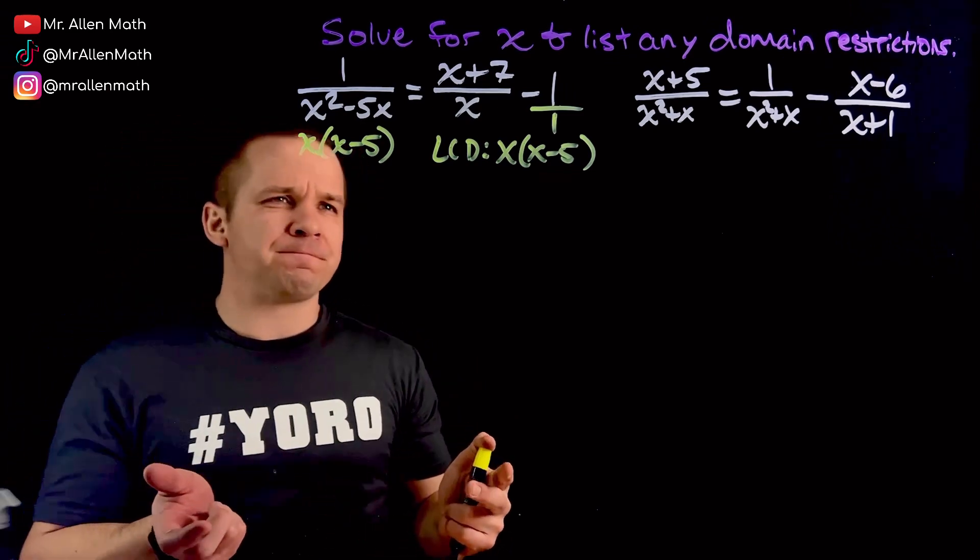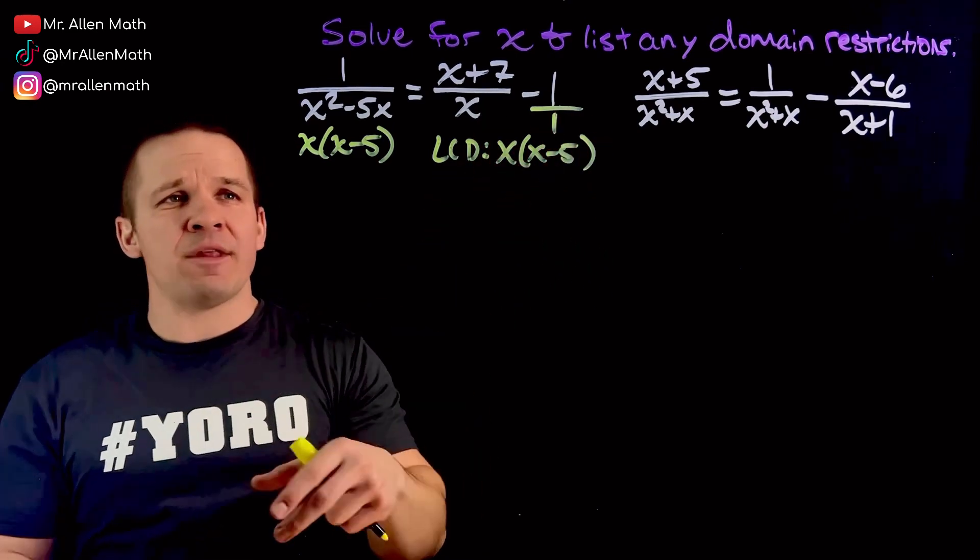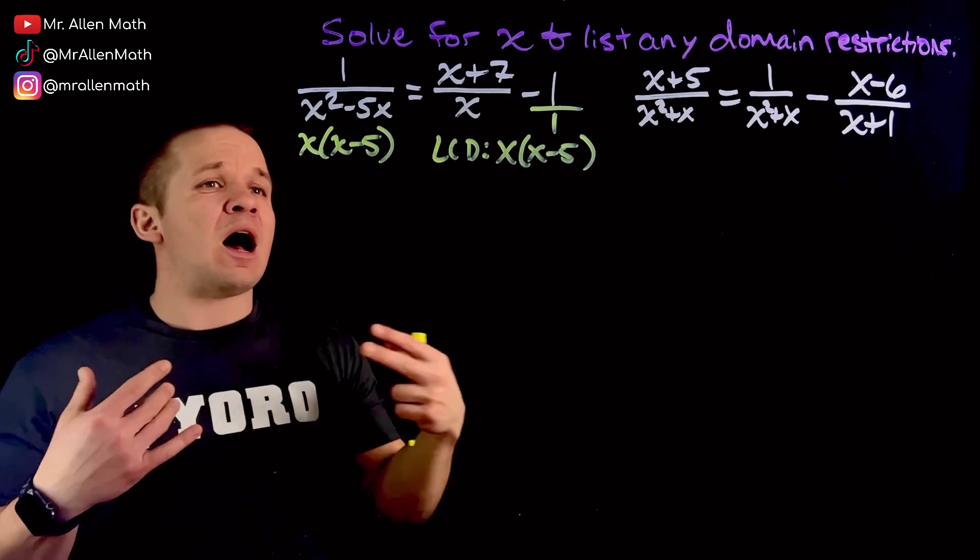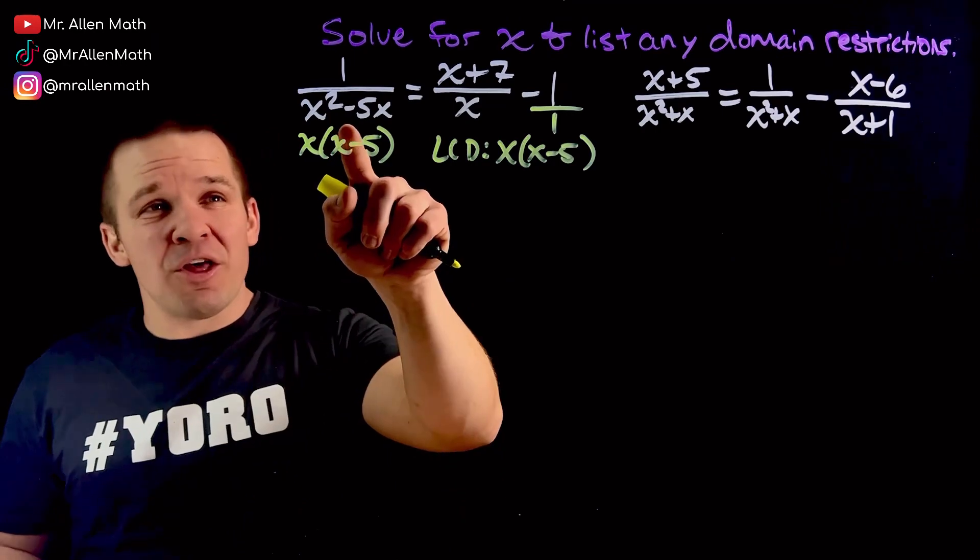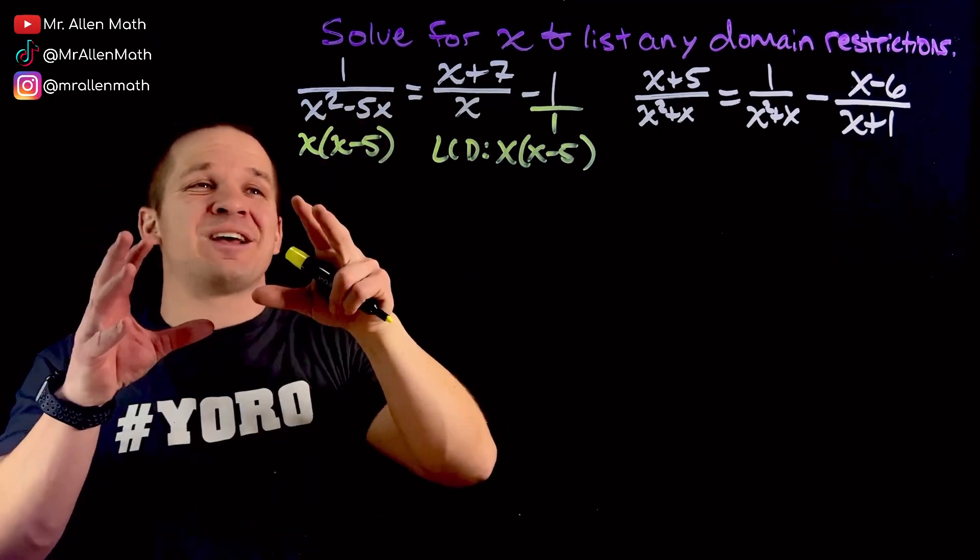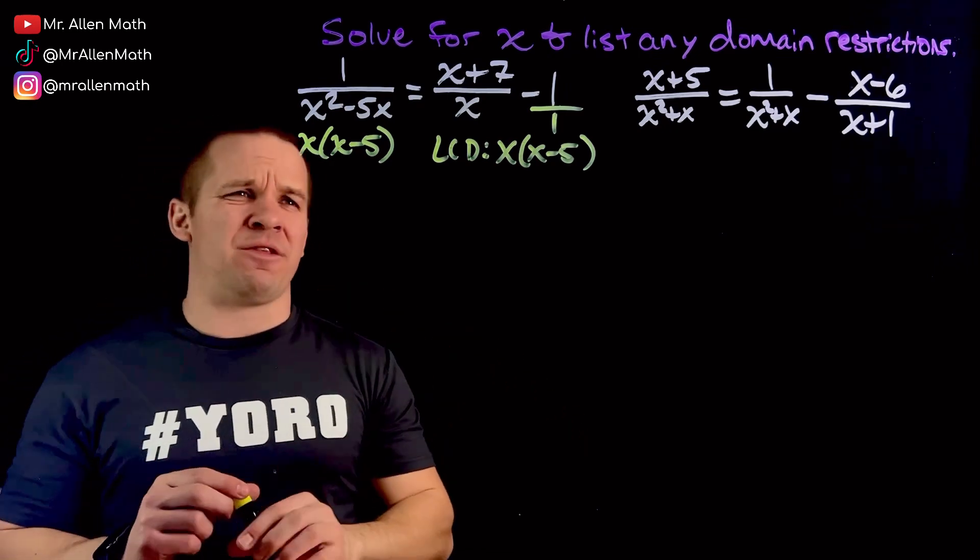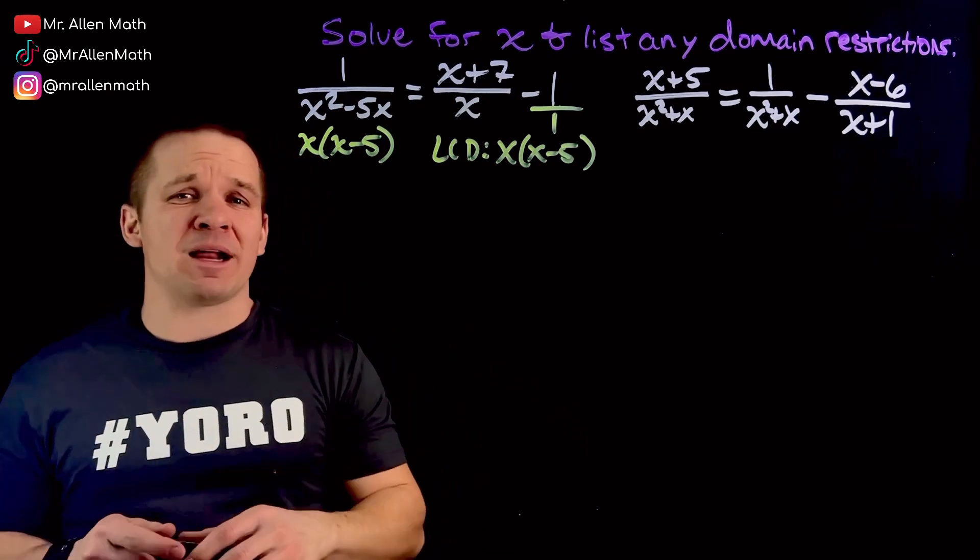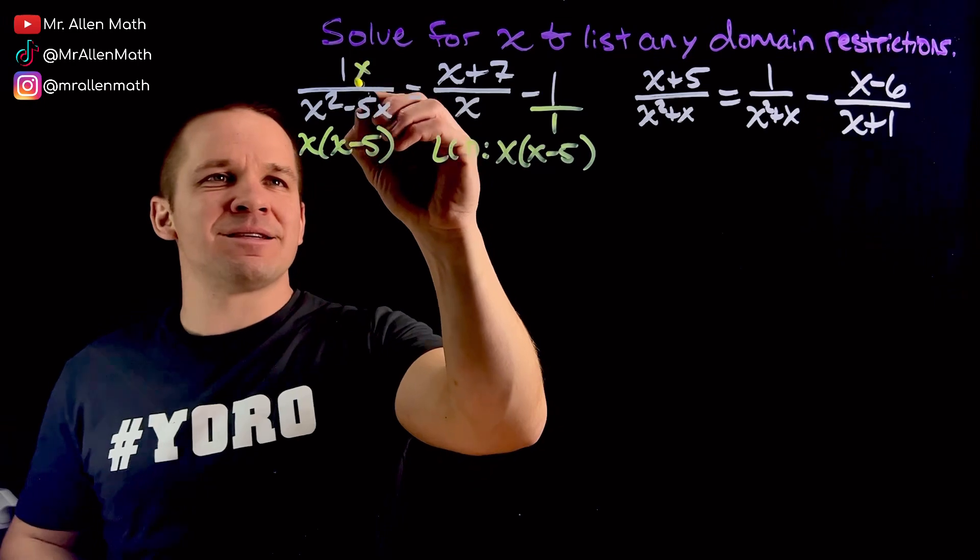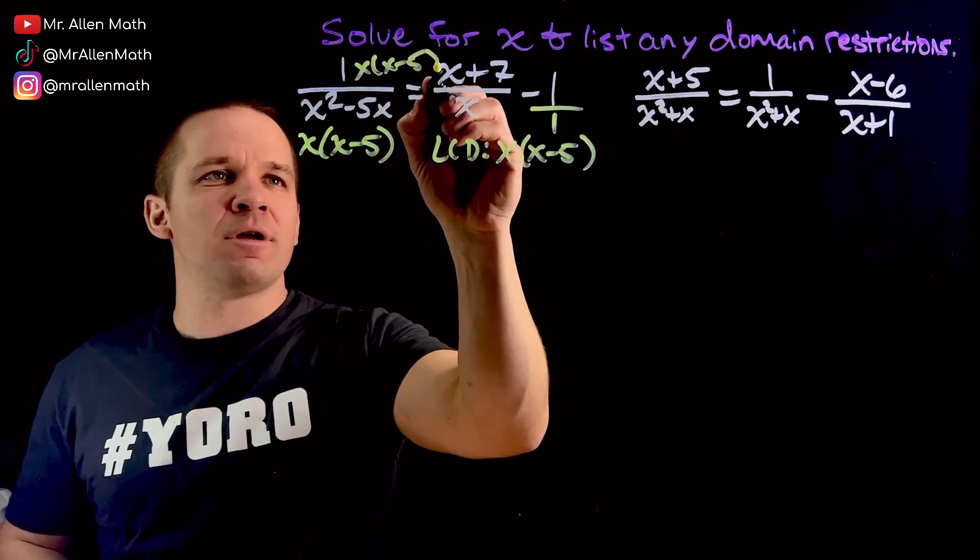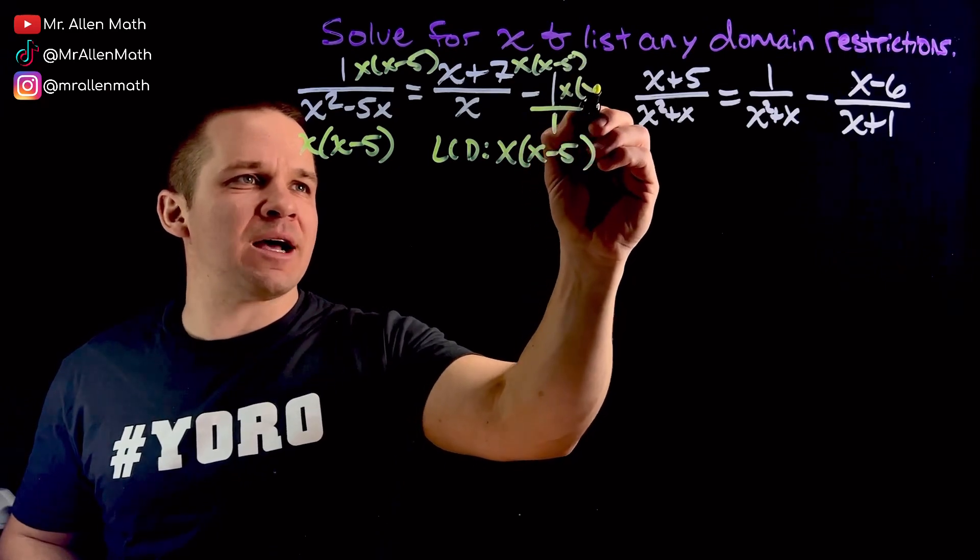So what do we do to solve? Well, you can go through and get common denominators here and here, and then compare all your numerators, or my preferred method, I multiply both sides by my LCD, and what that's going to do is these denominators here will divide with that. They'll cancel out, and I'll be left with just a single line, no more fractions.